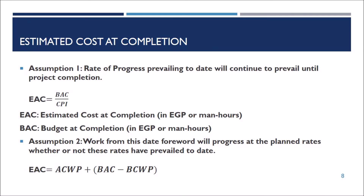Reverting back to the estimate at completion (EAC), there are two assumptions to calculate it. The first assumption is that the rate of progress prevailing to date will continue to prevail until project completion — in this case, you divide the BAC by the CPI to calculate the EAC. The second assumption is that work from this date forward will progress at the planned rates whether or not these rates have prevailed to date — in this case, the EAC is calculated by adding the actual cost to the estimate to complete (ETC).